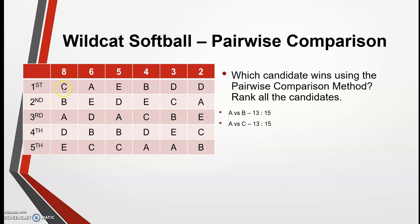Now let's compare A and C. C is ranked higher in column 1, so C gets 8. A is ranked higher in column 2, so A gets 6. A is ranked higher than C in column 3, so A gets an additional 5. C is ranked higher in column 4, so C gets 4. C is higher in column 5, so C gets 3 more. A is higher in column 6, so A gets 2 more — for a total of 13 votes for A and 15 votes for C.